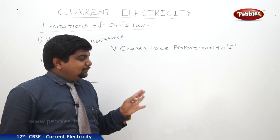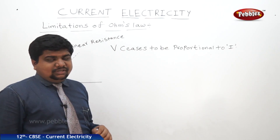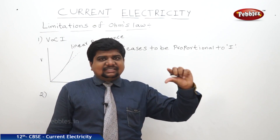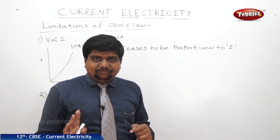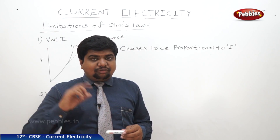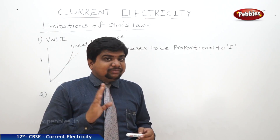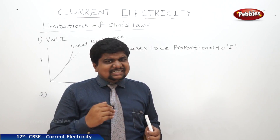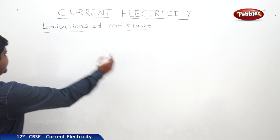We can see this type of graph in semiconductors or diodes. A PN junction diode consists of a P-type semiconductor and an N-type semiconductor fused together. This diode can be connected in two ways: forward bias or reverse bias. The forward bias graph and reverse bias graph will not be the same. The second limitation is that V and I are always opposite in direction.